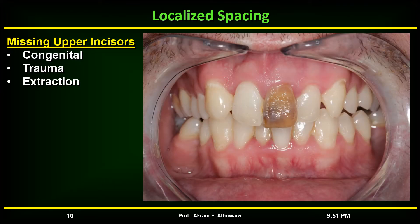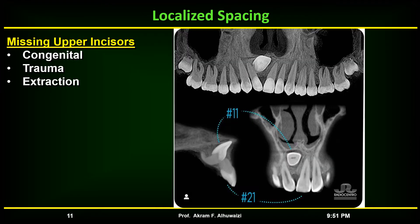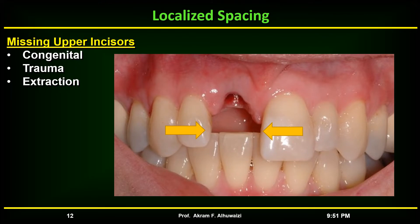Upper central incisors are rarely congenitally absent. They can be lost as a result of trauma, or occasionally their extraction may be indicated because of severe cases of dilaceration, like an impacted dilacerated tooth. Lost central incisors should be replaced to prevent adjacent teeth from drifting into the extraction site, as this midline shift will complicate later treatment.